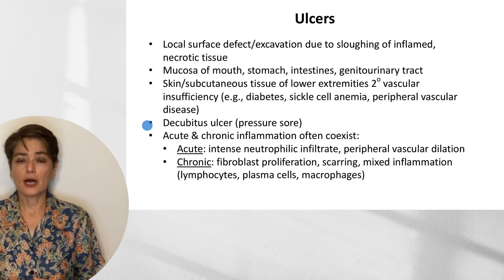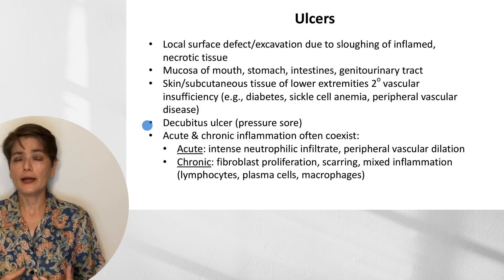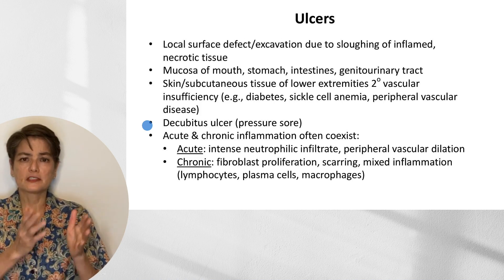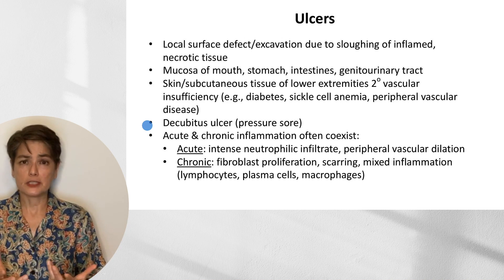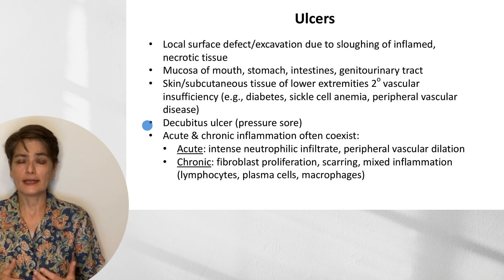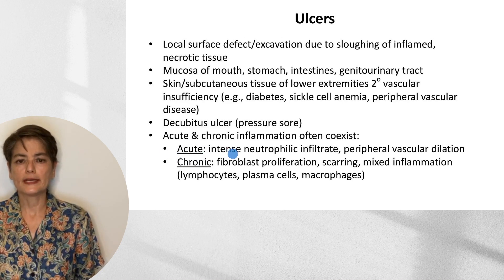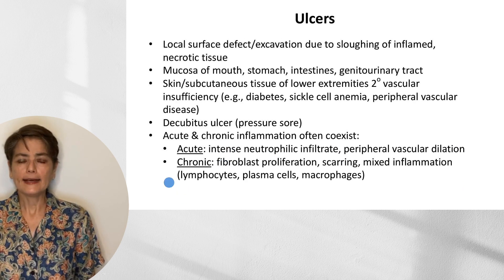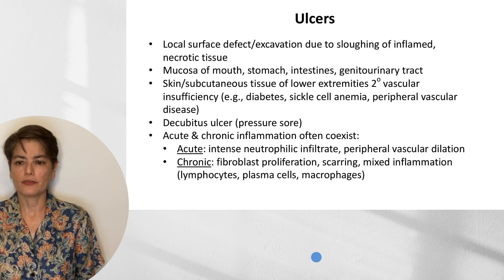Ulcers can have both acute and chronic inflammation at the same time — just another reminder that although we talk about acute inflammation, chronic inflammation, and granulomatous inflammation separately, you can see all of them together, as in the case of that splinter. In an acute ulcer, we get an intense neutrophilic infiltrate with peripheral vascular dilation. As it becomes chronic, we get fibroblast proliferation and scarring, and then mixed inflammation — so lymphocytes, plasma cells, and macrophages.